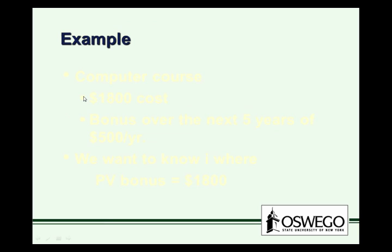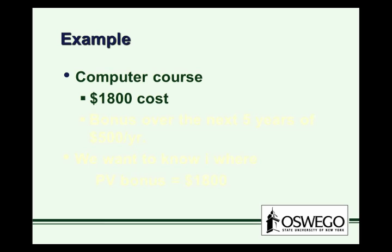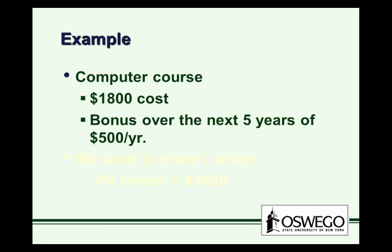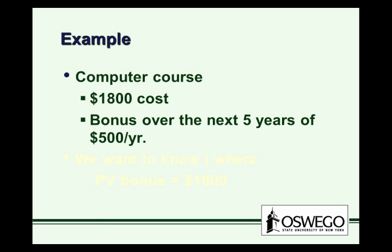Let's start with a very simple example. Suppose we have a computer course that you're considering taking on the job. It'll make you more productive, but the course is costly — it has an $1,800 upfront cost. However, your employer would like to encourage you to gather the skill, so they offer a bonus over the next five years of $500 a year if you take this course.